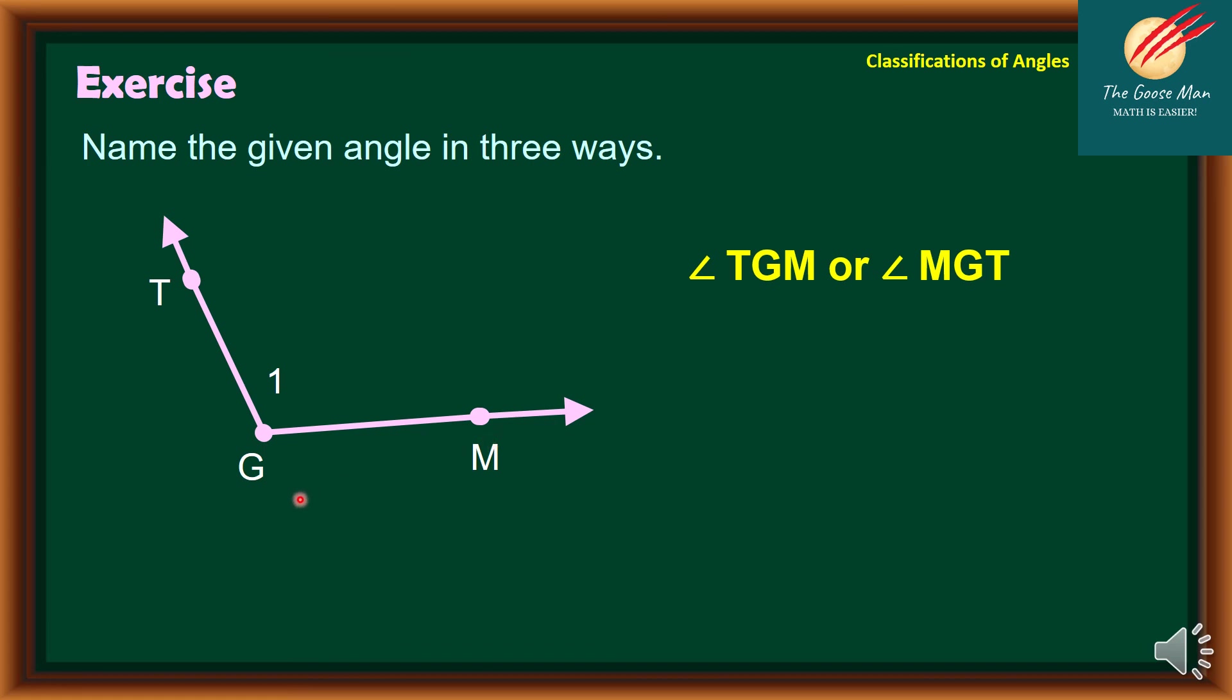Another way to name an angle is through its vertex, and our vertex is point G, so we can have angle G. And finally, we can name this angle through a number, so the name of this angle is also angle 1.